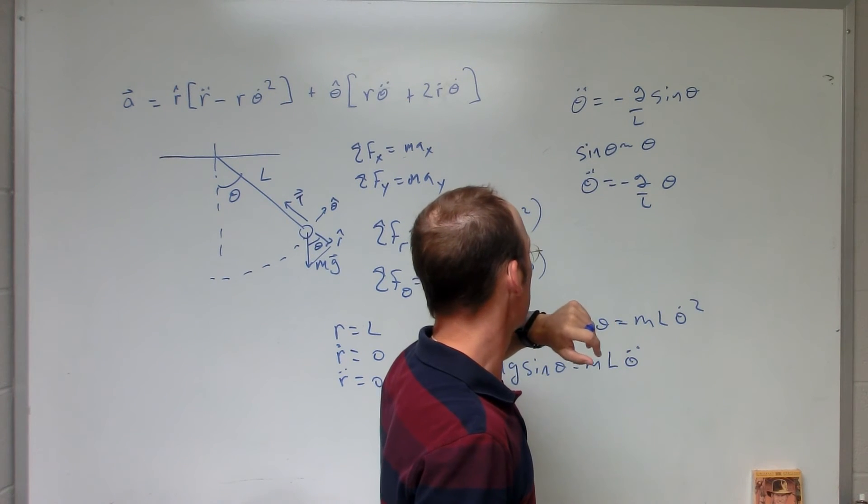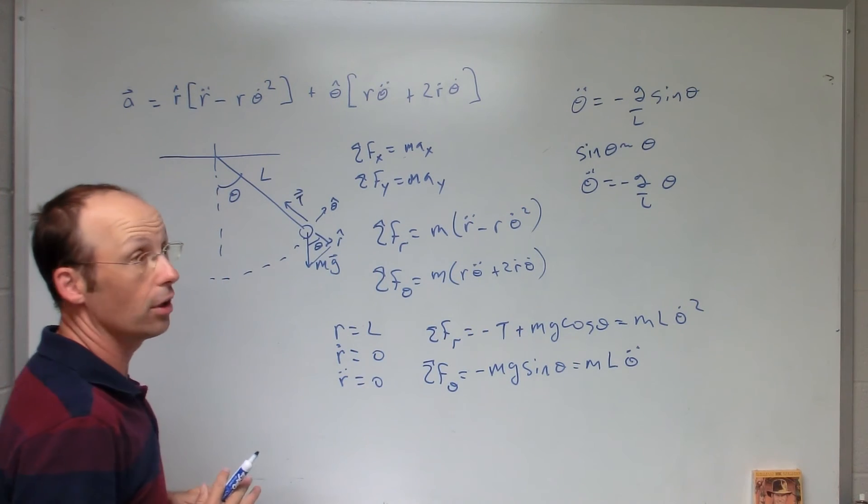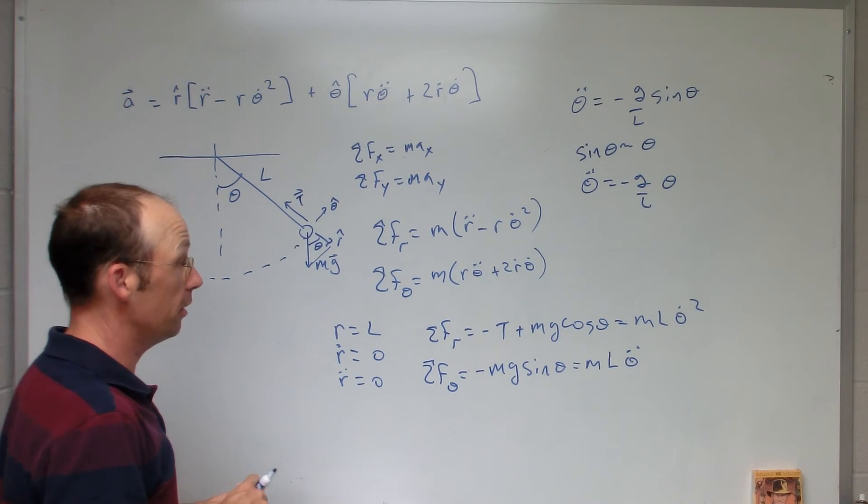Or negative L over g, because that would be on the other side. Okay. So the solution to this, you could guess, is a series, a sum of the sine and cosine. So let me just erase this.